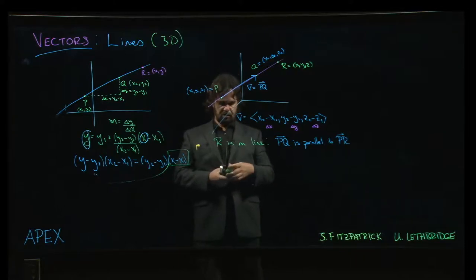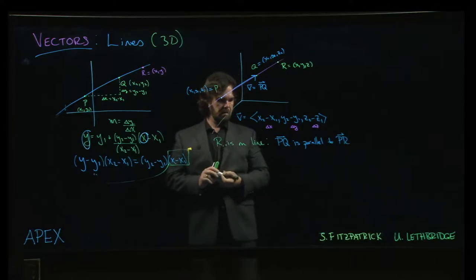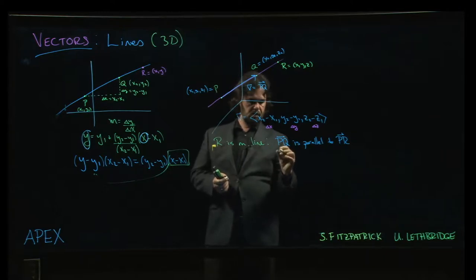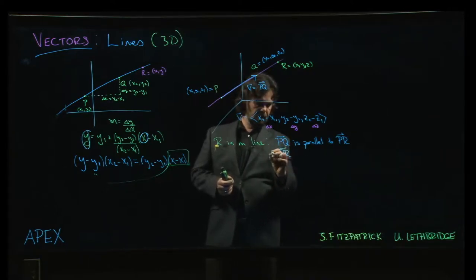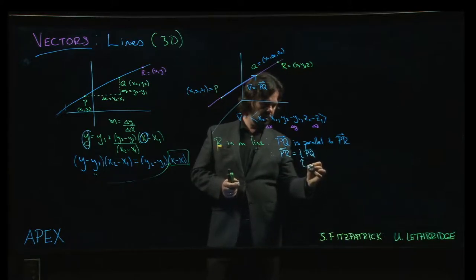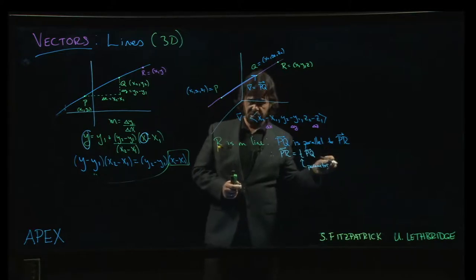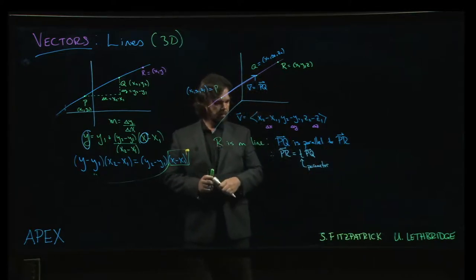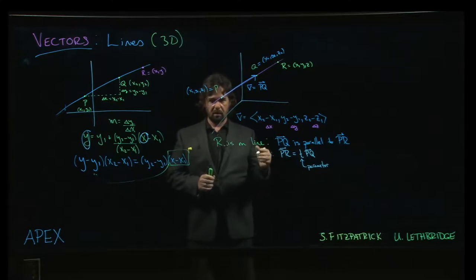So, in other words, what that means is that pr has to be some scalar multiple of pq. Now we call this a parameter, but for now just think of it as a scalar multiple.